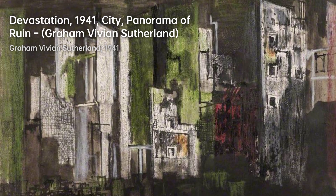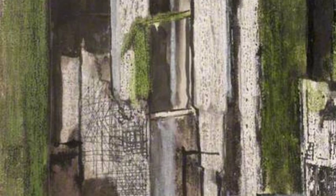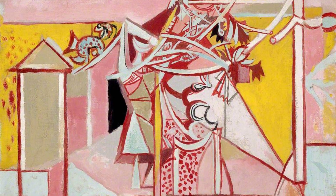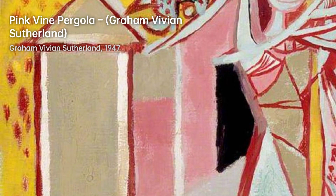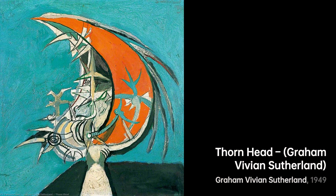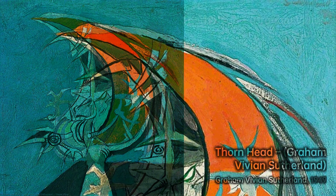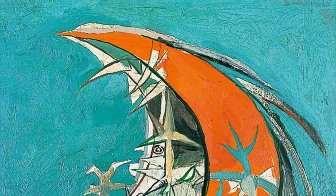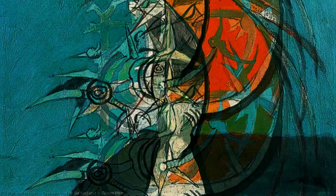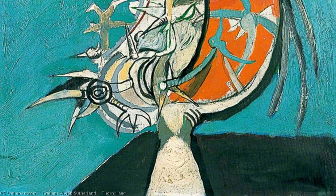In conclusion, Graham Sutherland was a versatile artist who made significant contributions to the art world. His ability to excel in various mediums, including printmaking, tapestry, and glass design, showcased his versatility and creativity. From early landscapes to powerful war depictions, he pushed the boundaries of traditional painting. Commissioned to design the central tapestry for Coventry Cathedral and having taught at various art colleges, Sutherland was a true visionary who left a lasting impact on the art world.